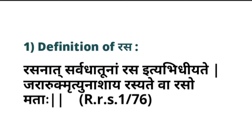First type: Rasa. What is the definition of Rasa? Parada or Mercury has one distinct property — Jarana property. Whatever metal or drug comes in contact with Mercury or Parada, it will digest it. It neither increases its weight nor loses it — it just absorbs every capacity or virya present in that Dhatu (metals or minerals). Rasanath Sarvadhatu — meaning the digestion of all Dhatus. That's why it is called Rasa.